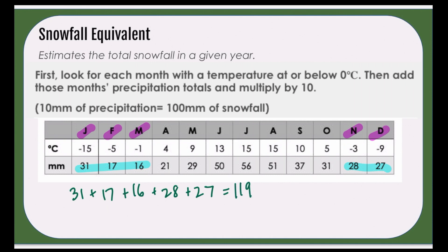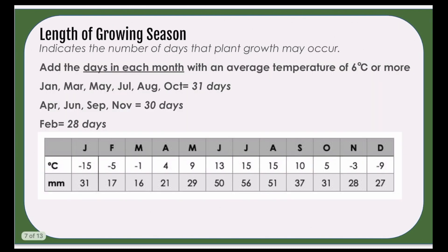Because snowfall is more dense, we need to multiply it by 10 to get a more accurate representation. So 119 multiplied by 10 gives us a total of 1190, and millimeters is again our unit of measurement.